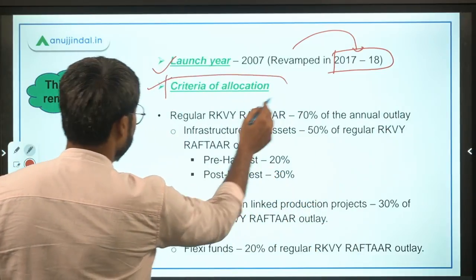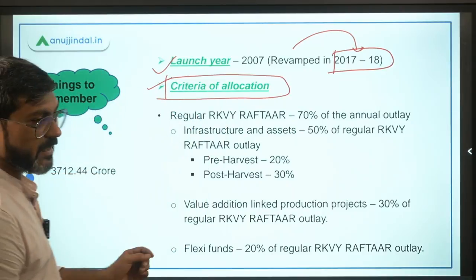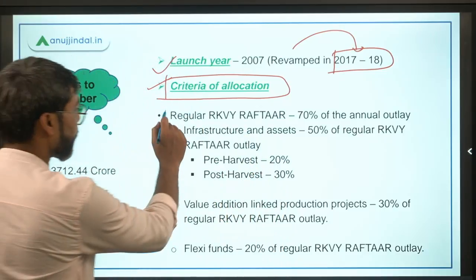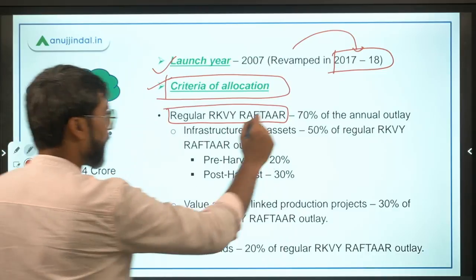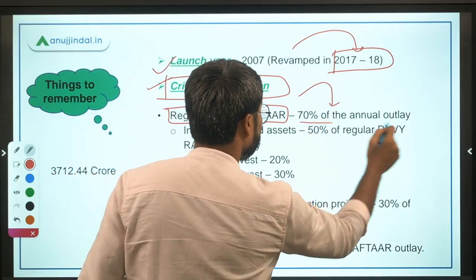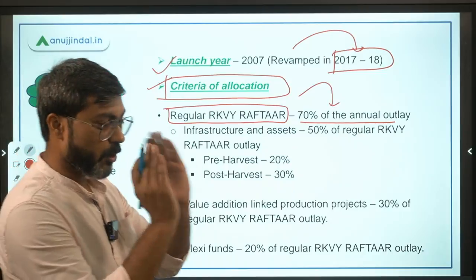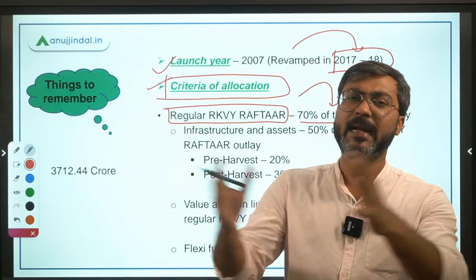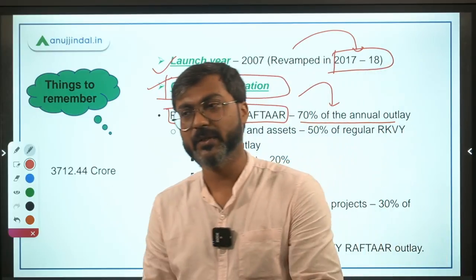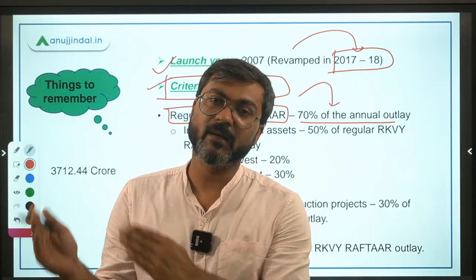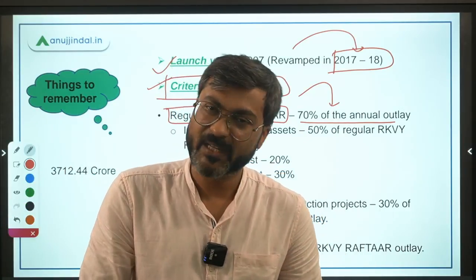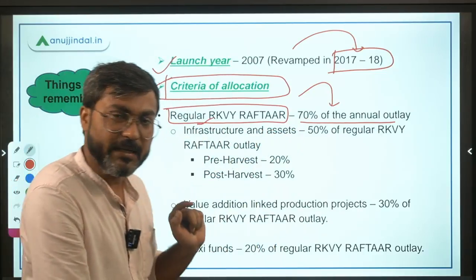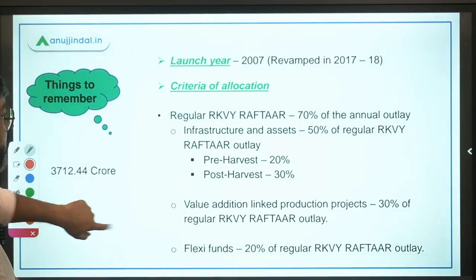Now regarding the criteria of allocation — the allocation is divided into two parts. Number one is Regular RKVY Raftar Outlay, under which 70% of the annual outlay is provided. So out of the total combined funding by the central and state government, 70 rupees (out of every 100) goes to Regular RKVY Raftar and the remaining 30 goes to the second part — RKVY Raftar Special Sub-Schemes and Innovation & Agri Entrepreneurship.